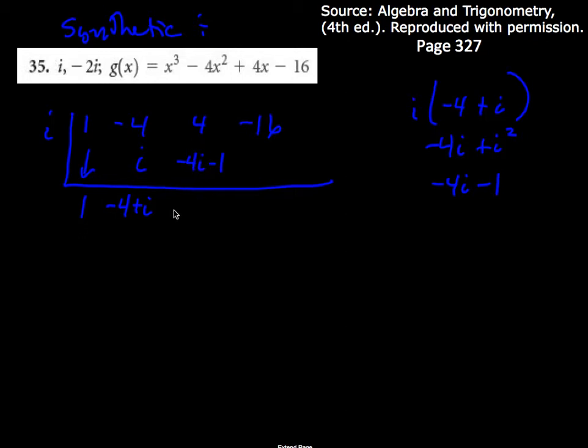Okay, now add. So, I'll have a minus 4i. And then 4, take away 1 would be plus 3. Oh, this is ugly, eh?